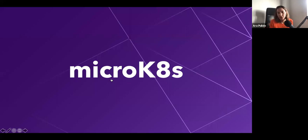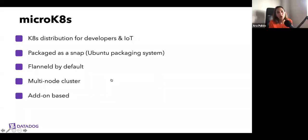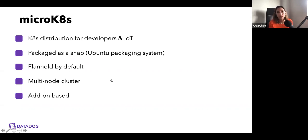The third one is MicroKubernetes, which is a little different. MicroKubernetes is a Kubernetes distribution by Canonical for developers and IoT — it's not only meant as your local cluster, it's also meant to be deployed on IoT devices. It's packaged as a snap, which is a packaging system created for Ubuntu. It uses Flannel as its CNI, supports multi-node clusters, and you can add several add-ons to your cluster, similar to Minikube.